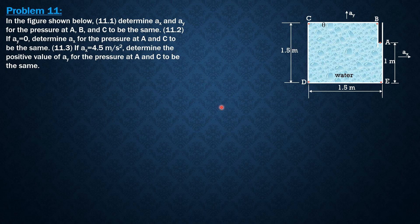So for them to be the same, all three to be the same, AX should be 0 because it can affect the surface of equal pressure. And AY should be negative G for it to be the same.